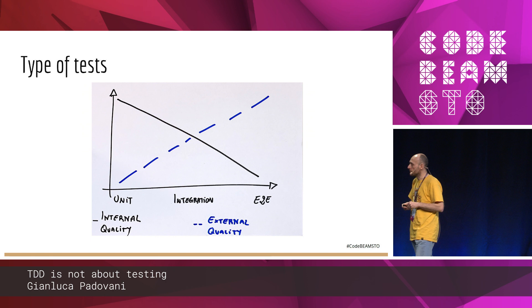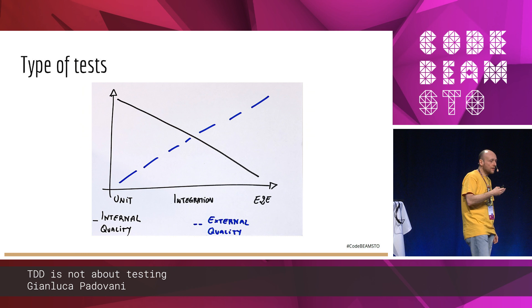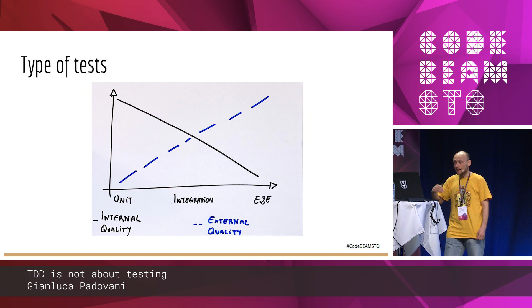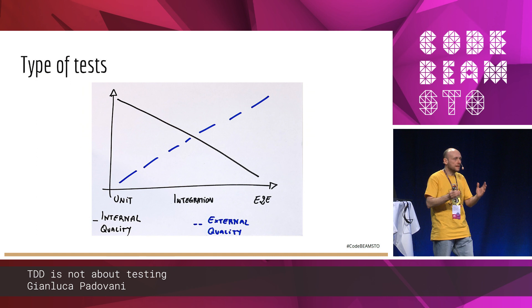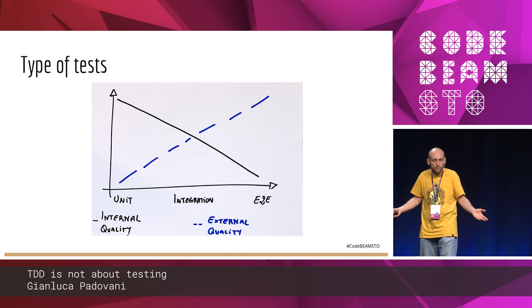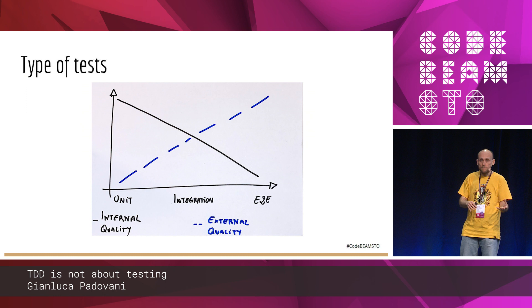If we are writing unit tests, we are getting a lot of confidence on the internal design of our application. If we are writing end-to-end tests, we are getting a lot of information about the external quality of our code. A lot of projects have a lot of unit tests but the production code simply doesn't work, because when you put everything together it doesn't work. If you put only end-to-end tests, you have a different type of problem because you don't shape your code in a good way.